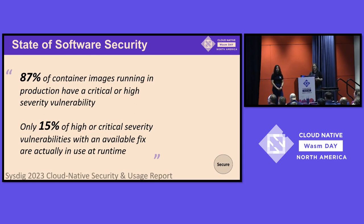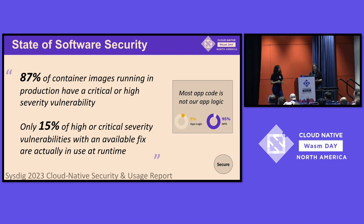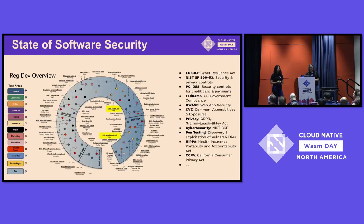That speaks to the way we have to build our apps today. Most of our app logic that is inside our code is not our own — it's usually open source software. That means we're pulling in a lot of stuff and it's really complicated. When you work in an environment that is perhaps regulated, there are all kinds of new legislation coming down the pipe, plus a ton that already exists with real teeth to make sure we're writing good, secure software.